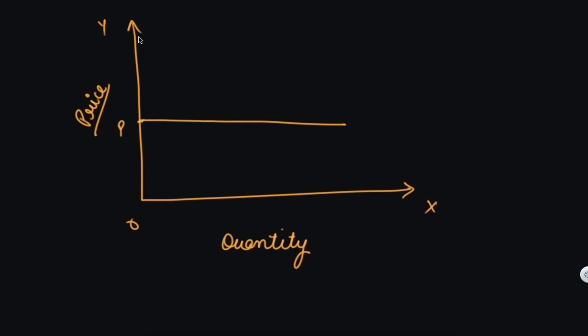See, this is the graph. This is your quantity supplied. This is your price. This is the price that is constant. Initially you were supplying Q1 of quantity. So this was your supply curve.